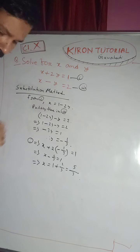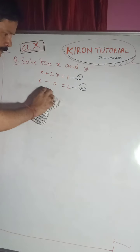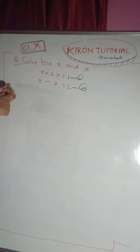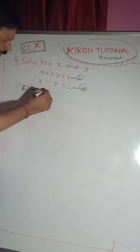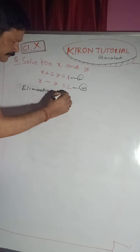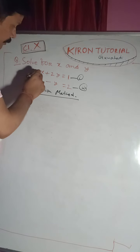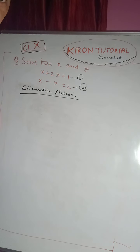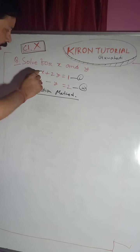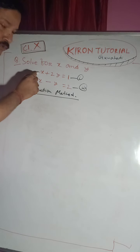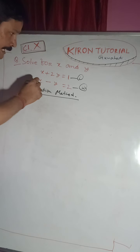So we get x equals 5 by 3 and y equals minus 1 by 3. This completes the substitution method. Now we look at the elimination method, also called the equating the coefficient method.